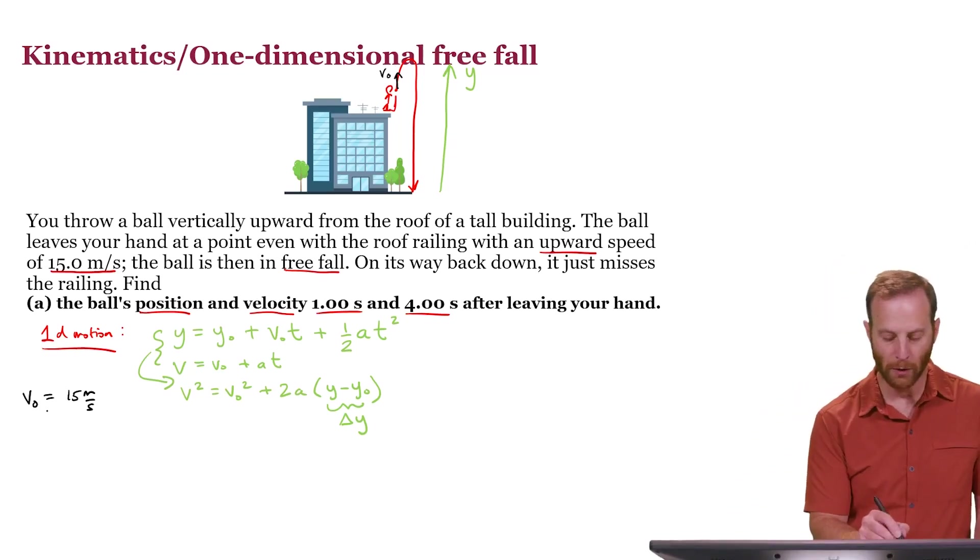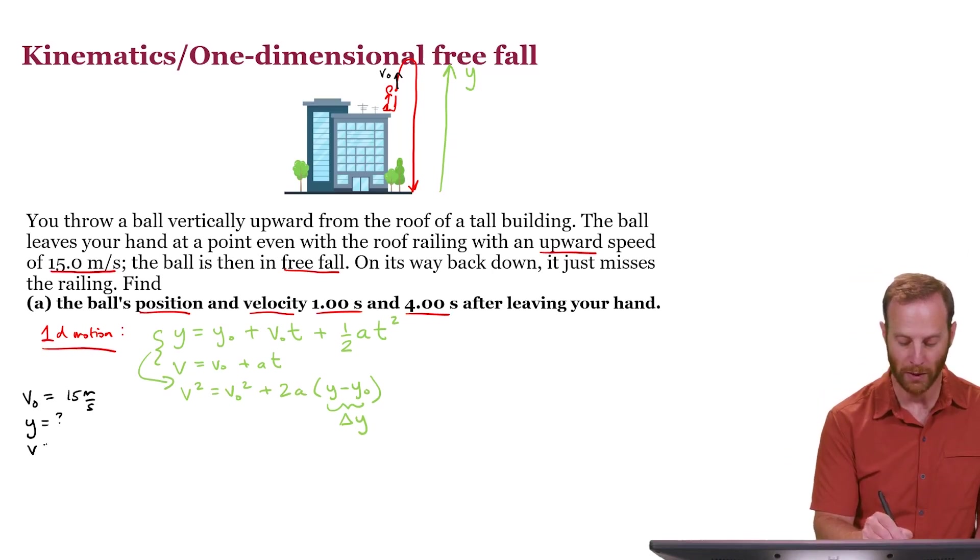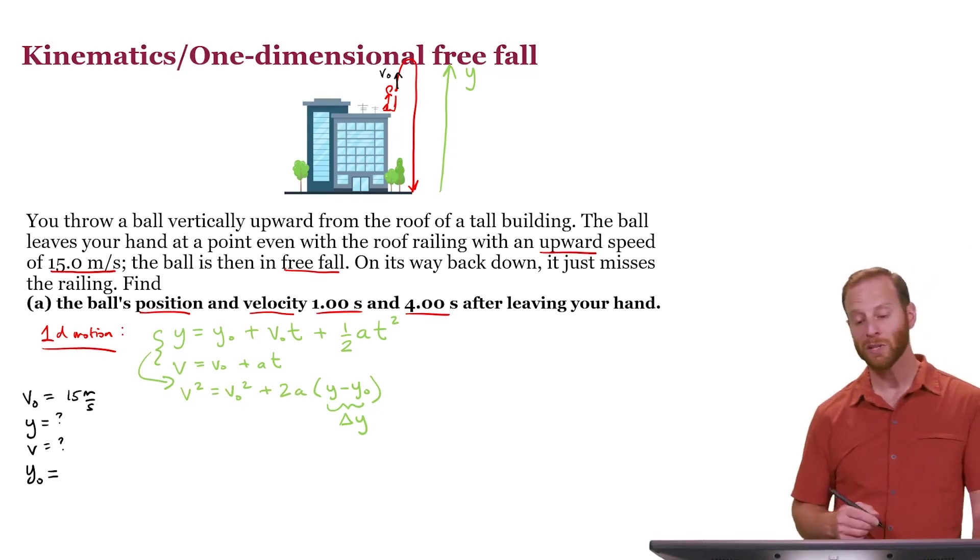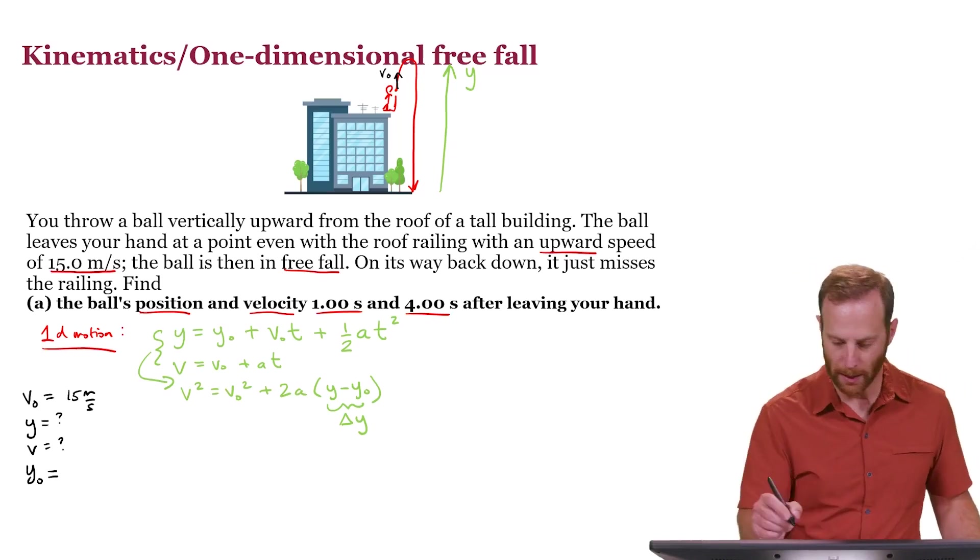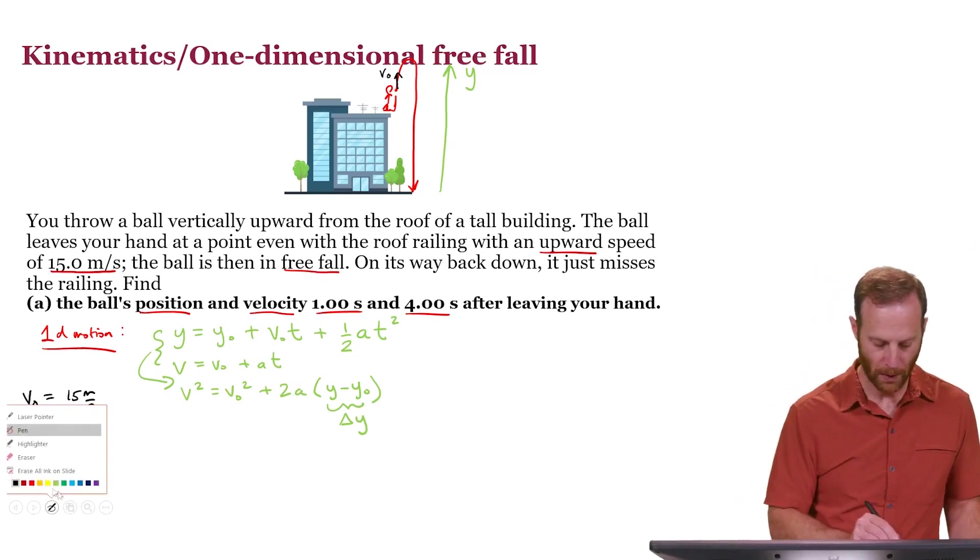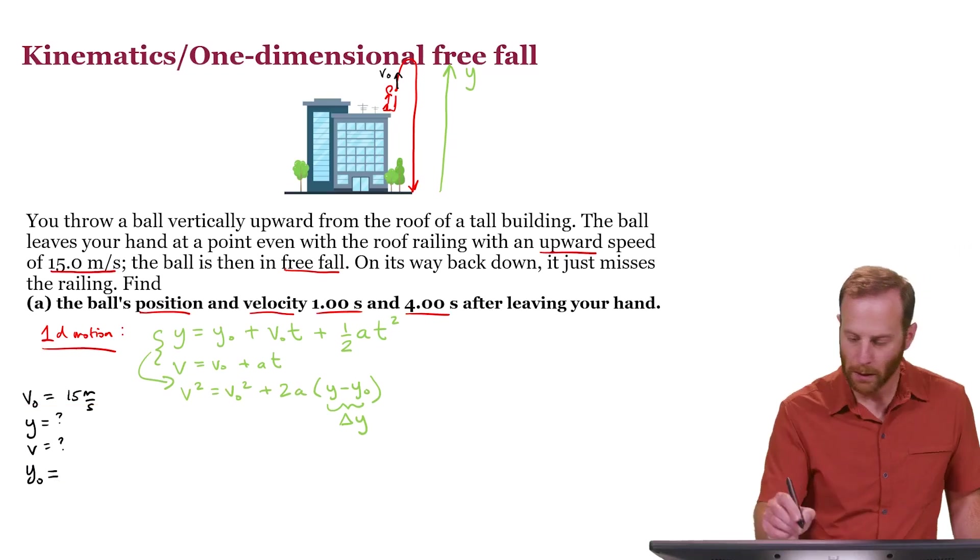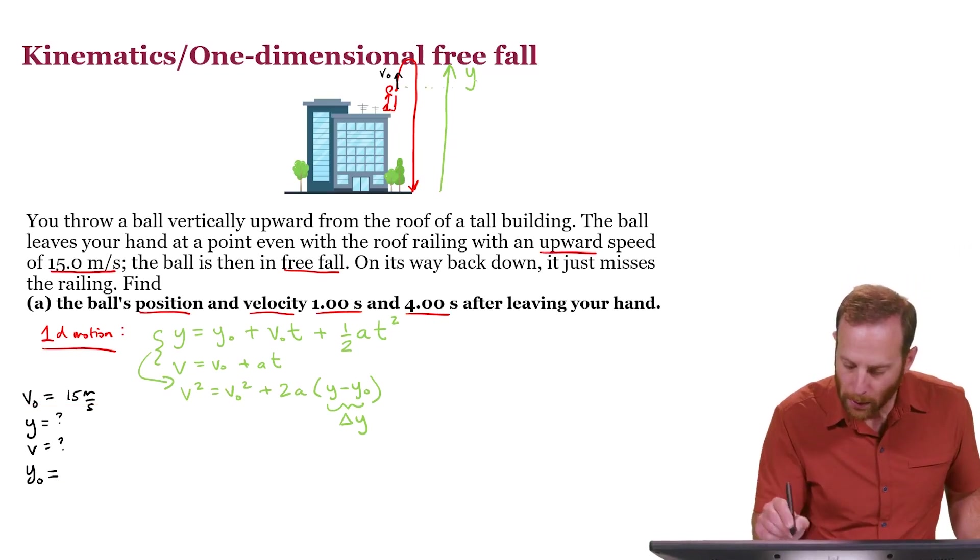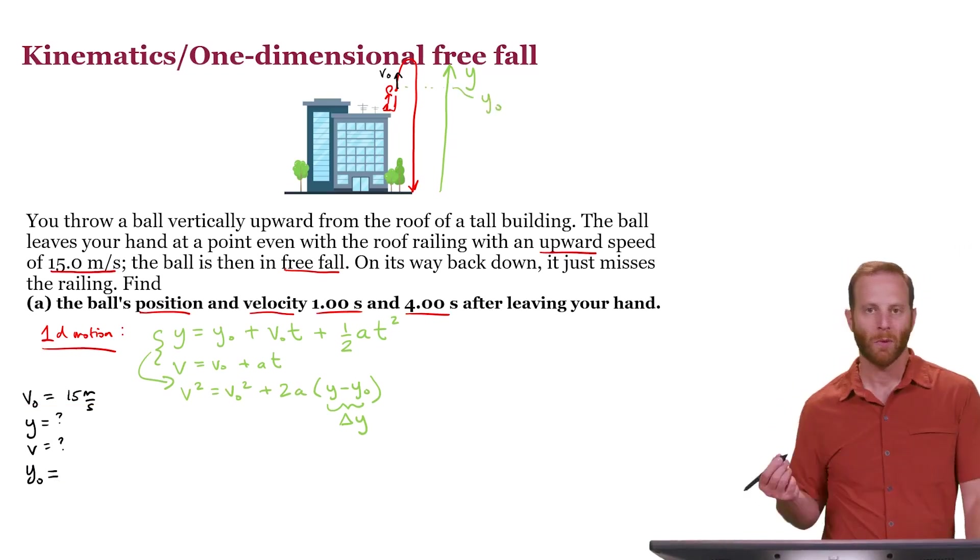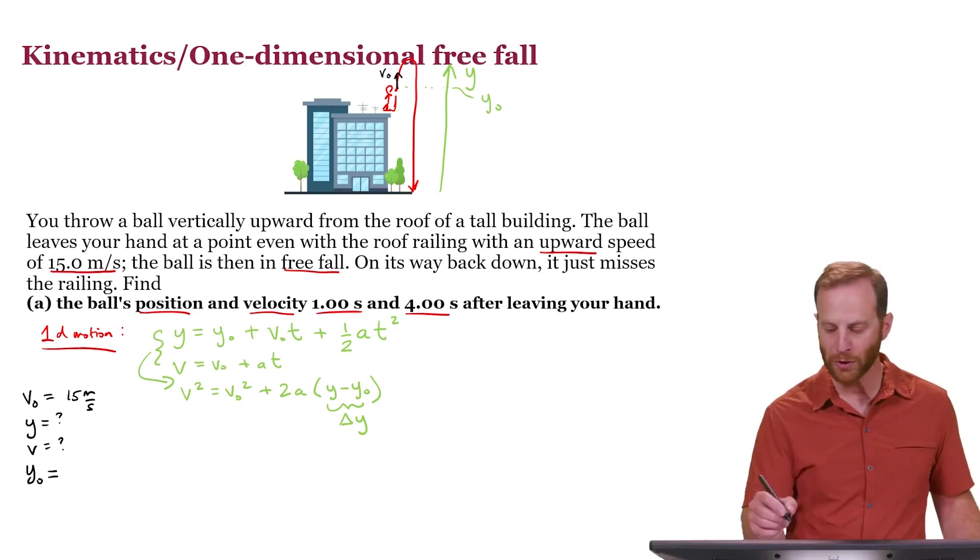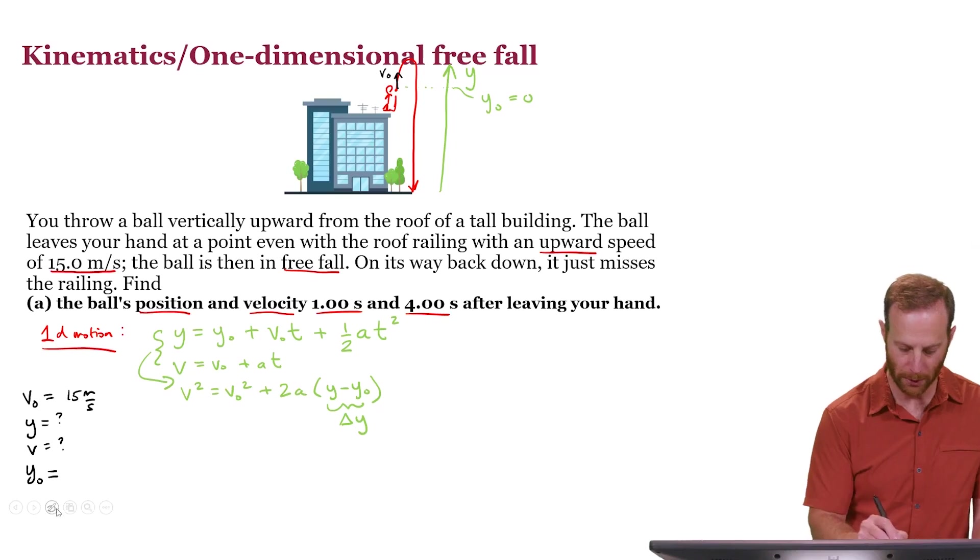We want to figure out what are the final position and final velocity at a later time. So we're going to want to know what is y and what is v at some later time. We don't know what the initial position is unless we decide to indicate that where the ball starts, that position y0, we can just decide to choose that to be equal to 0. It's like putting the 0 of our ruler right there. So let's make that choice.